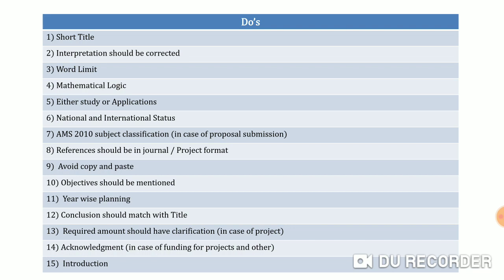Avoid copy-paste — this is very important. You cannot just search on Google or any other search engine, copy a whole word or line, and paste it into your proposal. Objectives should be mentioned. Whatever the title of the proposal, the objectives should also be mentioned. You should mention your planning — for example, a six-month or one-year plan: in the first half you are reading certain books, in the second half you are going for the actual on-field project or applications, and in the next year or half taking survey readings. It should be a year-wise plan.